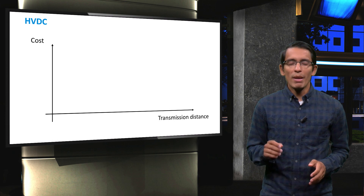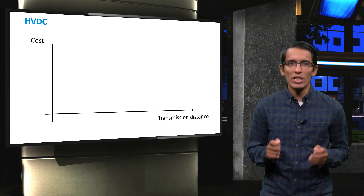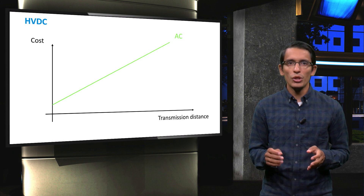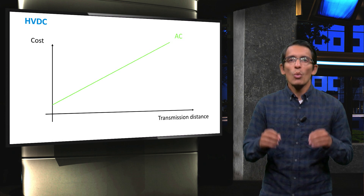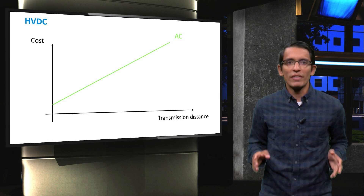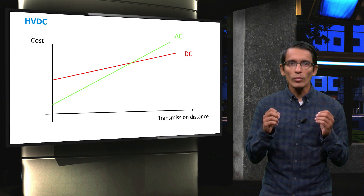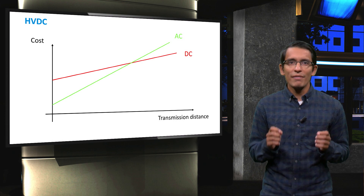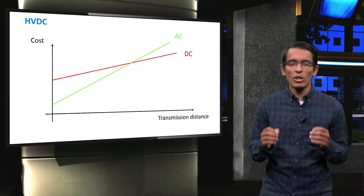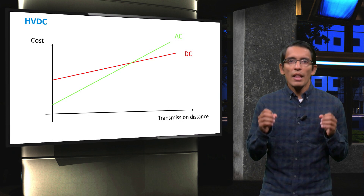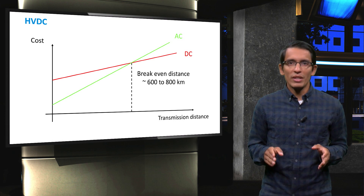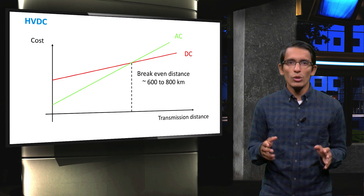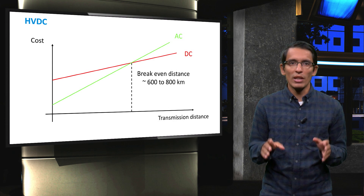It is also useful to make a comparison on the costs of AC and DC transmission. If we consider the cost of stations and lines, AC technology shows a relatively low investment cost at the beginning, which increases linearly with the amount of cables needed to cover the transmission distance. On the other hand, DC technology, shown in red on the graph, requires a high investment to set up the stations but has a lower cost per kilometer of cables. There is therefore a break-even distance after which the DC lines are cheaper than traditional AC transmission lines. This distance is usually around 600 to 800 kilometers for cables on land.